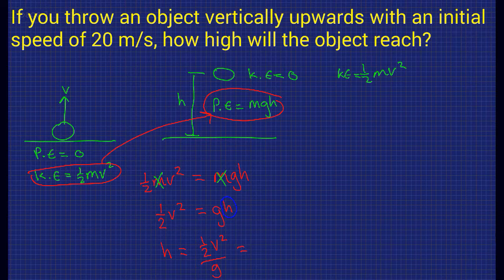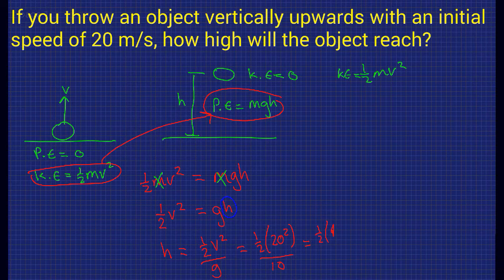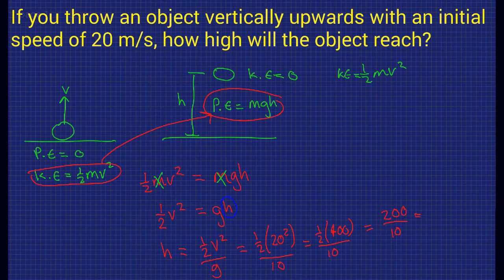We know v equals 20, so this is half of 20 squared divided by g, and g is approximately 10. 20 squared is 400, so this equals half of 400 divided by 10, which equals 200 divided by 10, equals 20 meters. The unit is meters because it's a height, and our speed is in meters per second.